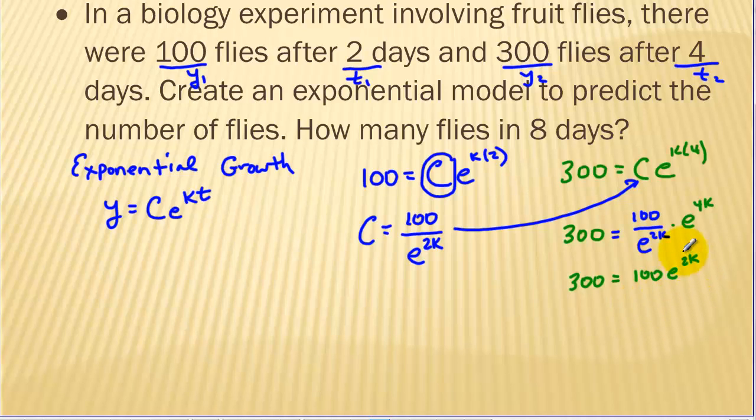To solve an exponential function we want to get the exponential part by itself, so I divide both sides by 100. I've got 3 equals e to the 2k. We can take the logarithm of both sides. Using our log properties this exponent comes to the front. The ln of e is just 1, so we get ln of 3 equals 2k. If we divide that by 2 we get k equals the ln of 3 over 2, approximately 0.5493.